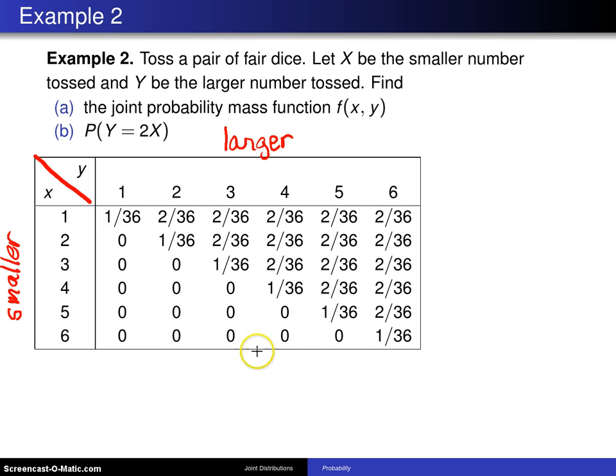Notice all the zeros down here. The smaller number cannot be greater than the larger number, so that's impossible. Along the diagonal here are doubles, and everywhere else there is 2/36.